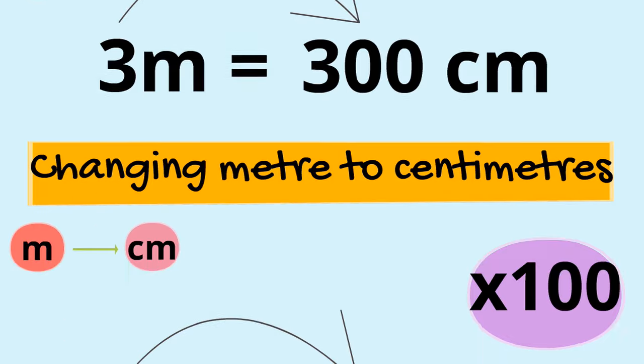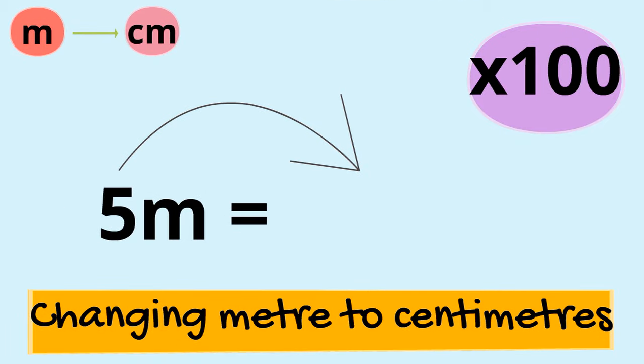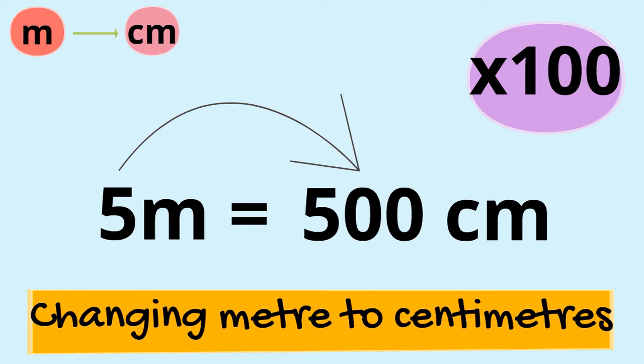So if we had 5 meters and we wanted to change it into centimeters, now that you know the rule, how many centimeters would it be equal to? Pause the video and write down your answer. Well if we multiply 5 by 100 like we have to for this rule, then we're going to get 500 centimeters.